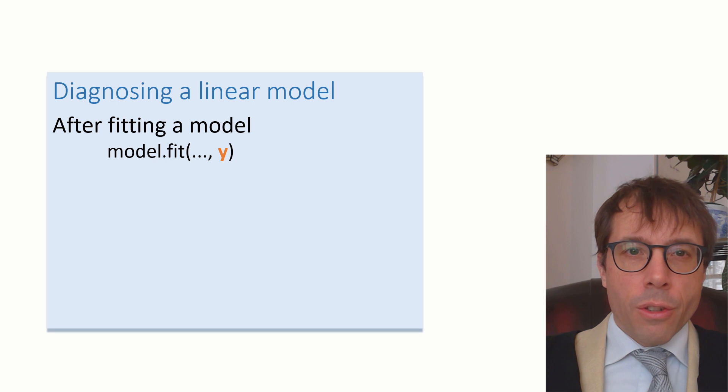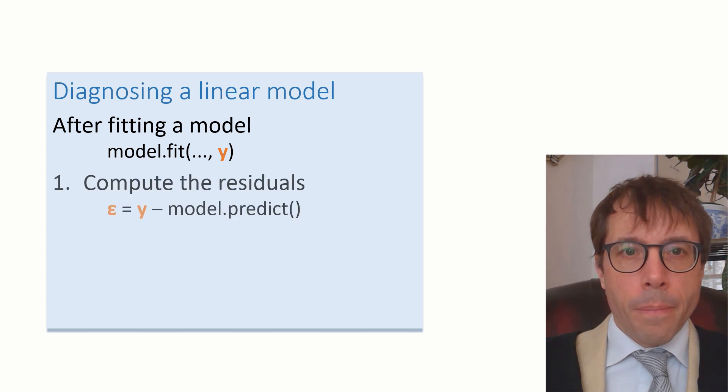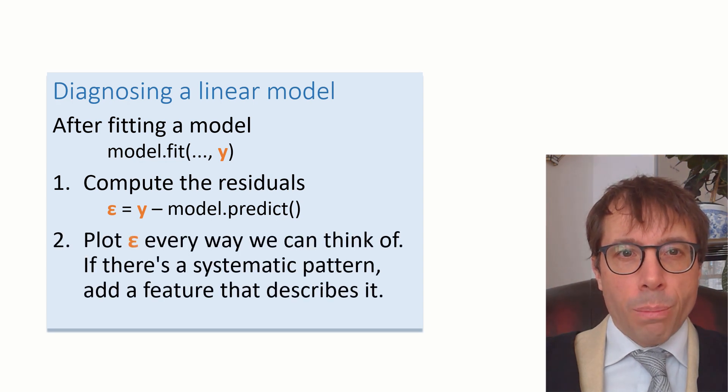Let's suppose we fitted a model. Let's say y is the response vector and the dot dot dot here is an array with all of the model's feature vectors as usual. First, compute the residuals from the model. The residuals are the difference between the actual response vector y and what the model predicts. Next, just plot the residuals epsilon every which way you can think of, plotted against all the predictor variables you can think of.